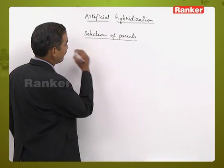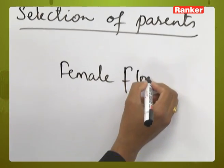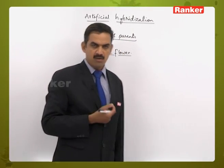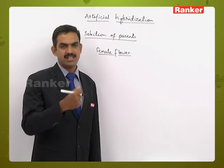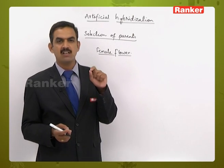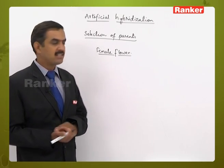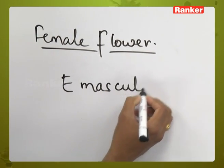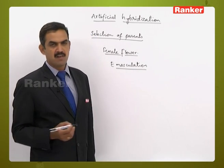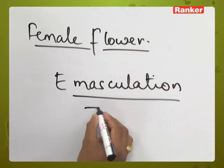Since the female parent has bisexual flowers, there is a possibility of self-pollination. To avoid this, the anthers or stamens are removed from the female parent — this process is called emasculation. The need for emasculation is specifically to prevent self-pollination in the female parent.